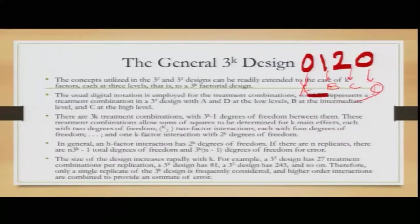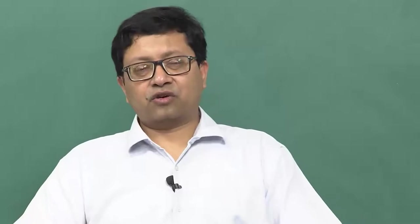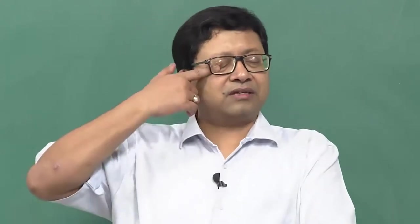The size of the design increases rapidly with k. For a 2-level design, 2 factors give 4 runs, 3 factors give 8, 4 factors give 16. For 3, 4, or 5 levels per factor the increase is even faster — for example, 5² is 25, 5³ is 125, 5⁴ is 625 combinations. This is tedious, but a decision must be made on the best level of efficiency given time and cost constraints.